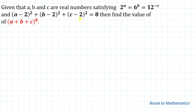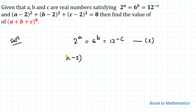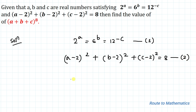We have two equations and we are asked to find the value of the given expression. So without any delay, let's start the solution. Our first equation is 2 to the power a equals 6 to the power b equals 12 to the power minus c. Let's consider equation 1 first and take this equal to a constant k.